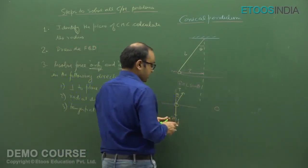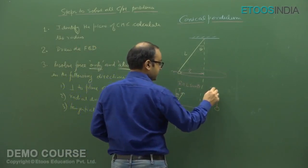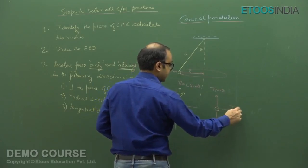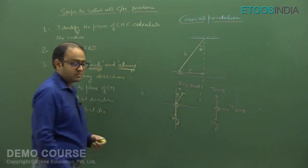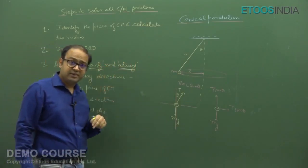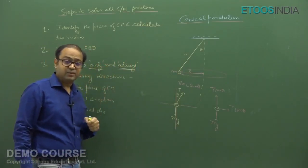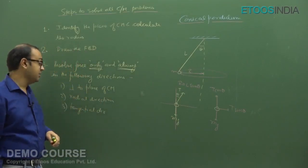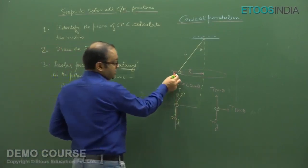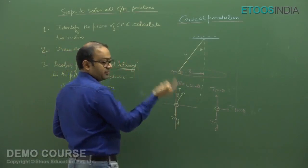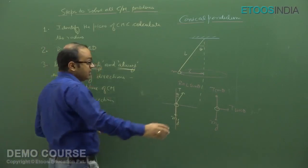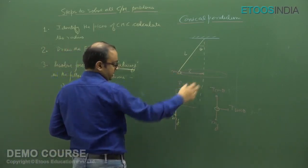After resolving, we get: a force upwards of T cos theta, a force downwards of Mg, and a force towards the right of T sin theta. There is no tangential force. If the tangential force is absent, that means the tangential acceleration is zero, which means this circular motion is uniform. We will discuss non-uniform circular motion a bit later.